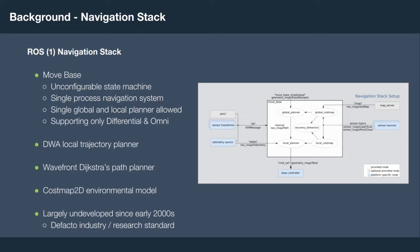One of the flagship projects within ROS was the navigation stack, which has been used for over 10 years by research, academia, and industry. It is primarily based around MoveBase, which is an unconfigurable single-process state machine. It does allow for full autonomous navigation, but really only works effectively on differential and omnidirectional robots, and only allows a single global and local trajectory planner at one time. The algorithms it provides include a DWA local trajectory planner and a Costmap 2D environmental model — a 2D occupancy grid based model. While it is the industry standard, it has been largely undeveloped since the early 2000s with no significant refactors or new algorithms since then.